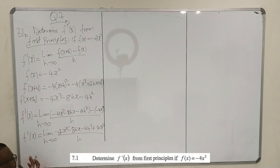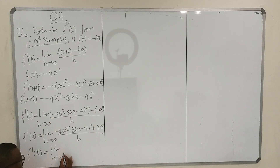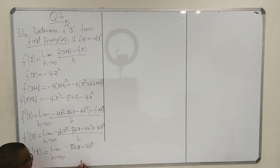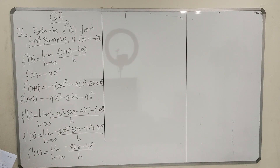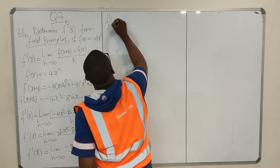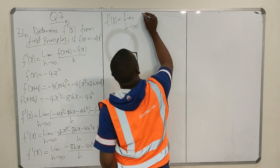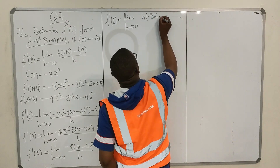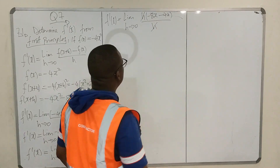The minus 4x squared terms cancel out. So we are left with f prime of x equals the limit as h goes to 0 of minus 8hx minus 4h squared over h. Then we take out the common factor h on the numerator, so we have h times the quantity minus 8x minus 4h, all over h, and the h's cancel.